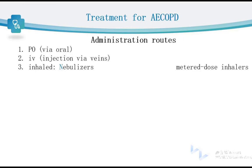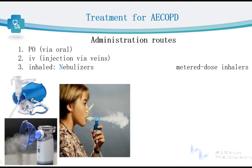There are three administration routes for drugs in COPD patients. The first is oral, or PO. Another is intravenous injection, or IV. The third is inhaled, using different devices. One type of device is the nebulizer. These two devices shown are nebulizers — we add liquid medicine into the device, and the patient inhales the drug through the mouth or nose.